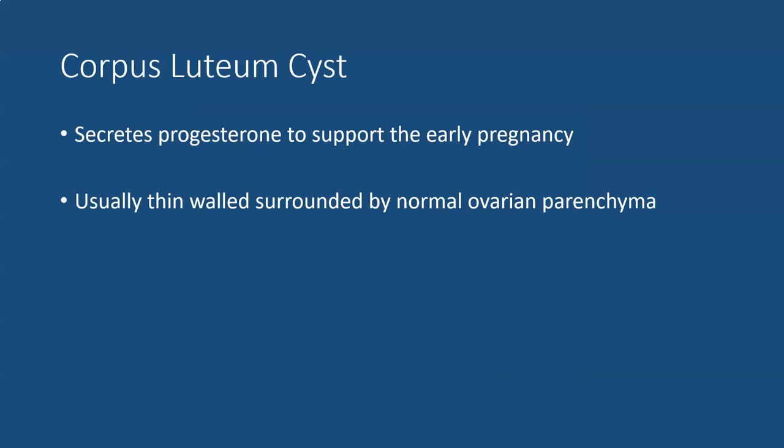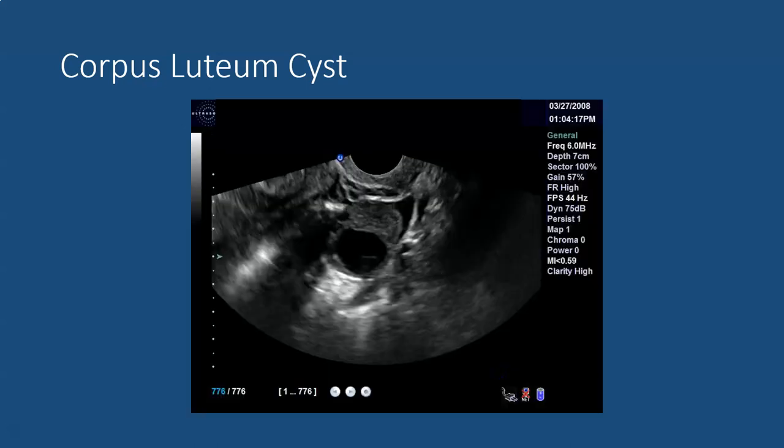Corpus luteal cysts are very common, also called corpus luteum cysts. They're seen within the ovary and are usually fairly simple in appearance, meaning they don't have internal echoes. They secrete progesterone early on in the pregnancy to support it. This is a corpus luteum cyst in the left ovary with a small amount of free fluid, which is normal and physiologic.